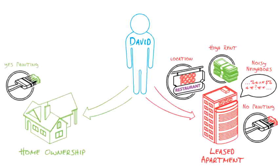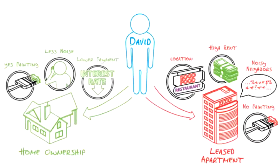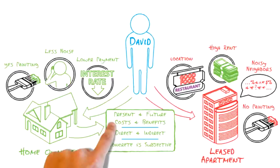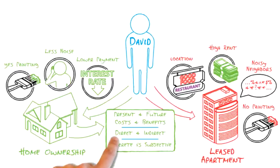He could then paint his living room, hear much less noise through the walls, and thanks to a loan with a low interest rate, pay considerably less for his monthly mortgage than his current rent. To help make his decision, David identifies the present and future costs and benefits of homeownership, including both direct and indirect costs, and concrete versus objective costs.